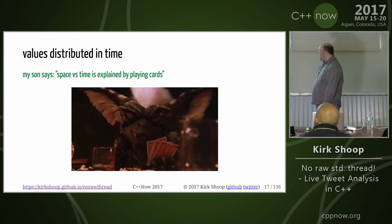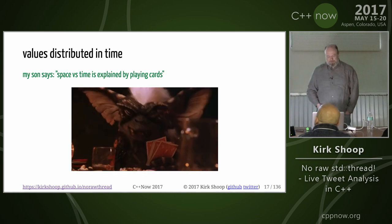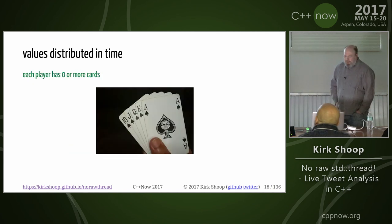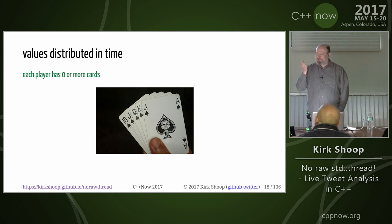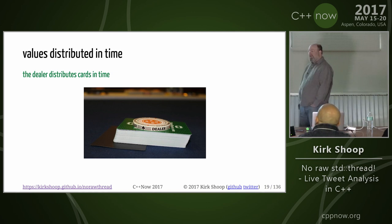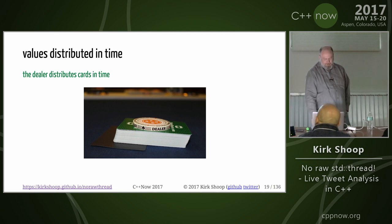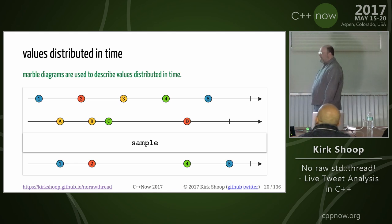My son described it well: it's like playing cards. Each player has zero or more cards in their hand — you can use them right now, you don't have to wait, like a vector or list. But the cards in the deck you can't use — they may come to you eventually when the dealer gets around to it. They're distributed in time. The marble diagrams help us describe the types of algorithms for sources that have values distributed in time.